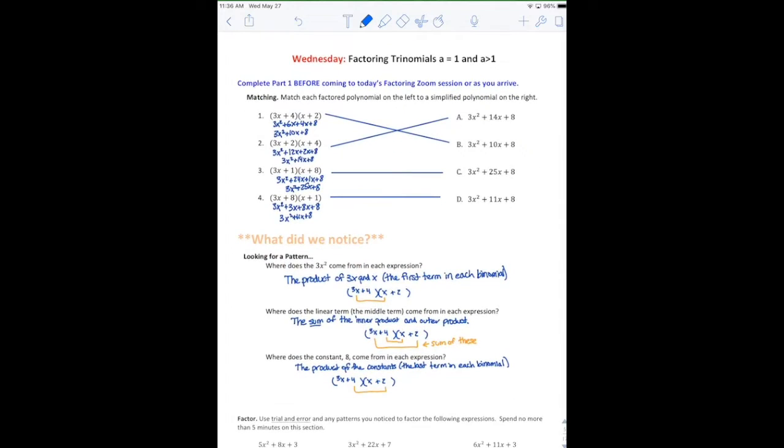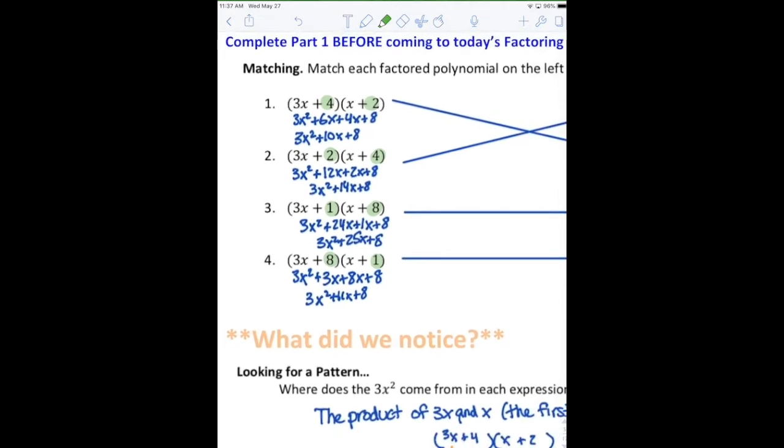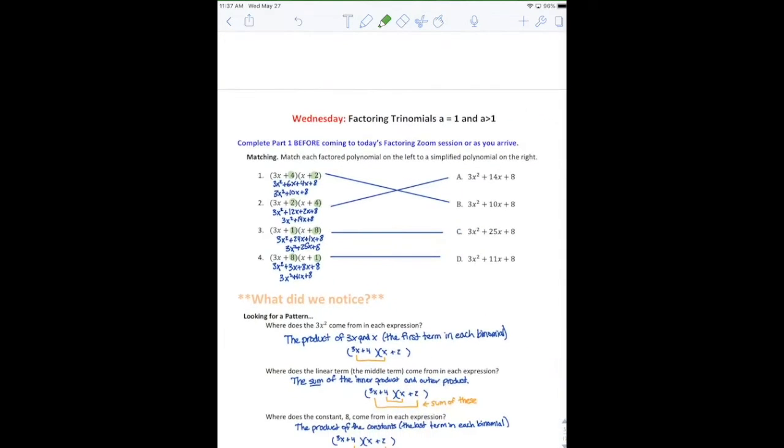So this was to get you thinking about factoring again. If you notice, each of these expressions looks pretty similar. They all have a 3x and an x, and then they have two numbers that multiply to 8. You'll notice that depending on the order that these are in, we end up getting four different expressions on the right.